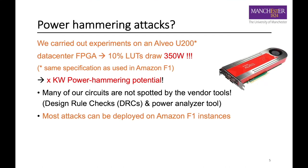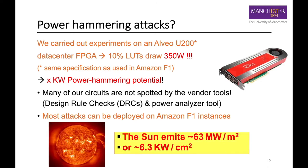So, how severe could power hammering attacks be? To give you some numbers, only 10% of lookup table resources could draw up to 350W. That translates to kilowatts of power hammering potential. Interestingly, many of our circuits are not spotted by the vendor tool, and some can be deployed on AWS F1 instances. To give a comparison, the sun emits 6.3 kilowatts per square centimeter — our number is not that far away.